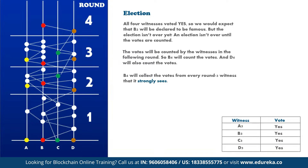B4 and D4 will be counting the votes. The hashgraph doesn't yet have an A4 and C4, but as more gossiping occurs, there may eventually be an A4 and C4 and they will count the votes too. B4 collects the votes from every round three witness that it strongly sees. To strongly see a witness, there must be enough different paths so that together the paths go through a supermajority of the population. A supermajority is any number more than two thirds of the population — with four members, any three constitute a supermajority. B4 strongly sees A3 via paths through Alice and Bob, and through Alice, Bob, and Dave. Carol isn't needed because Alice, Bob, and Dave make up a supermajority.